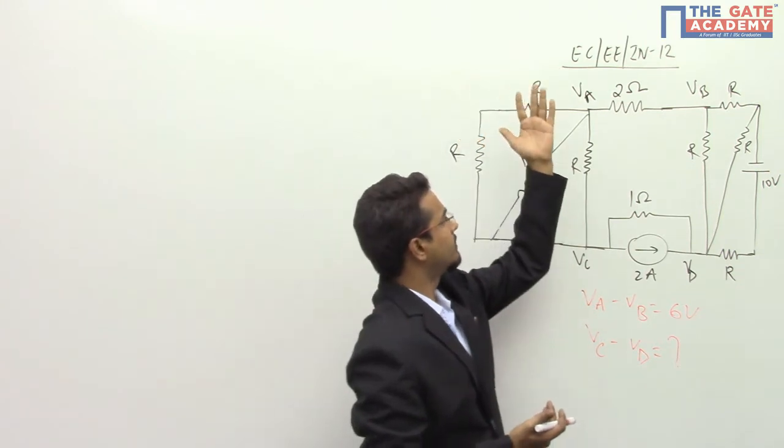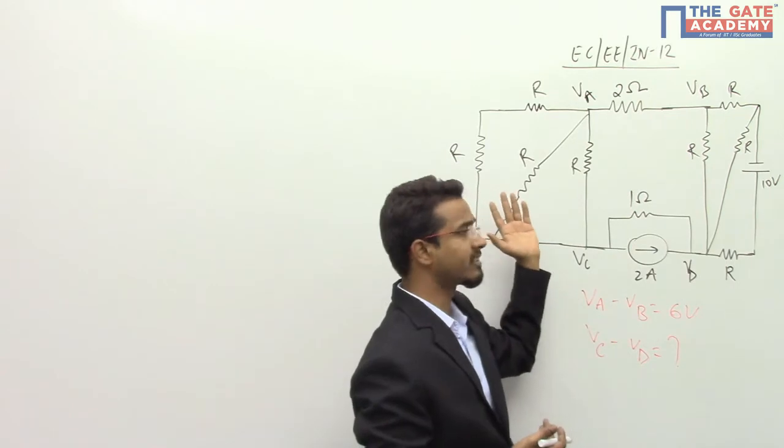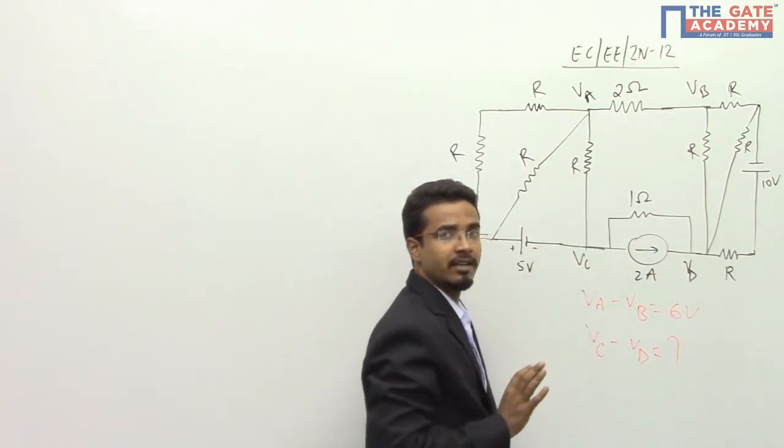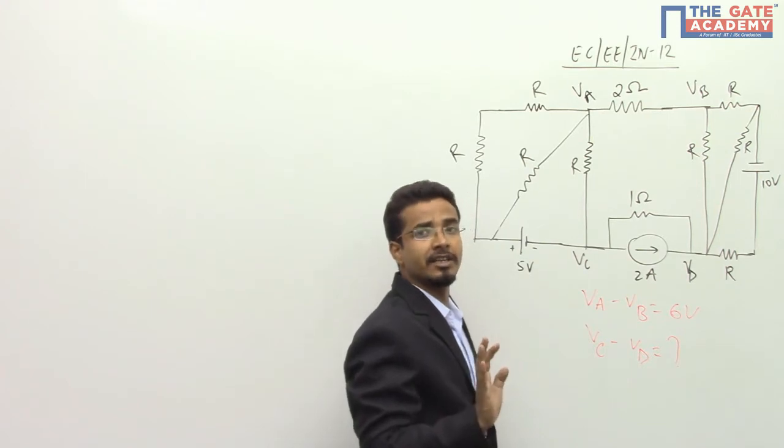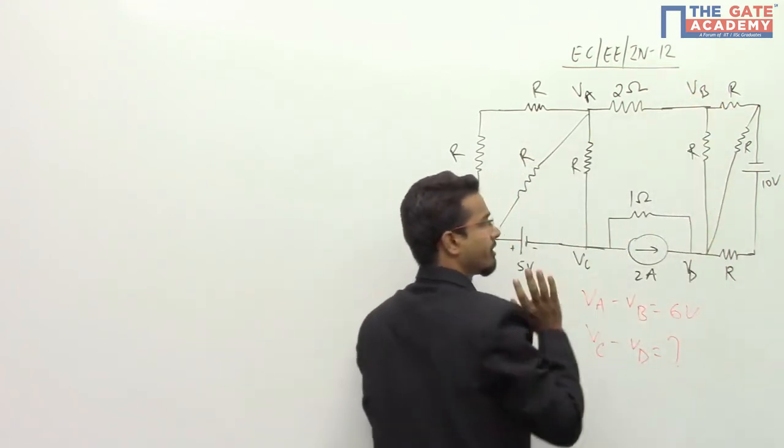If any current is moving from this side to this side in the circuit, the same current must have to come back in the same circuit. That means you cannot destroy any charge and you cannot create any charge. Whatever the charge you will pull from here, you have to give it back to the circuit.